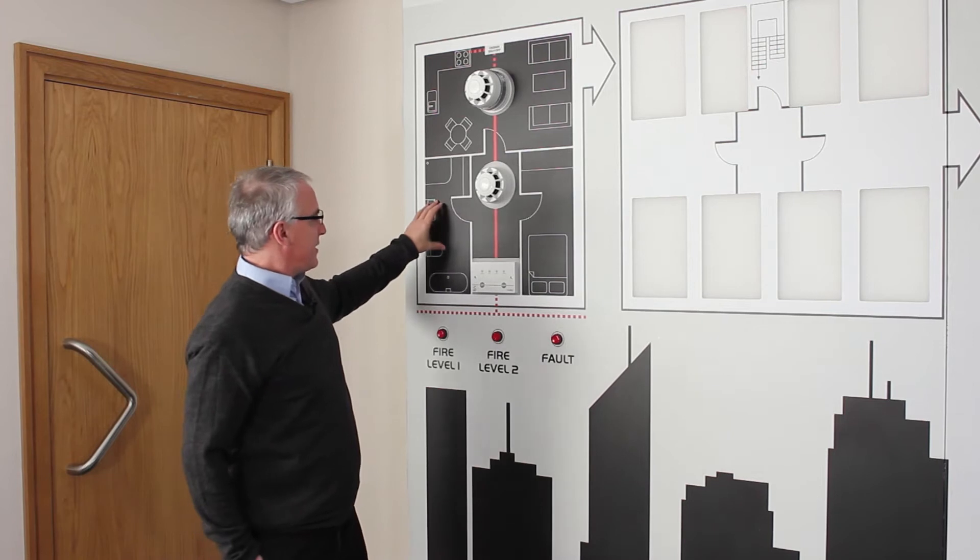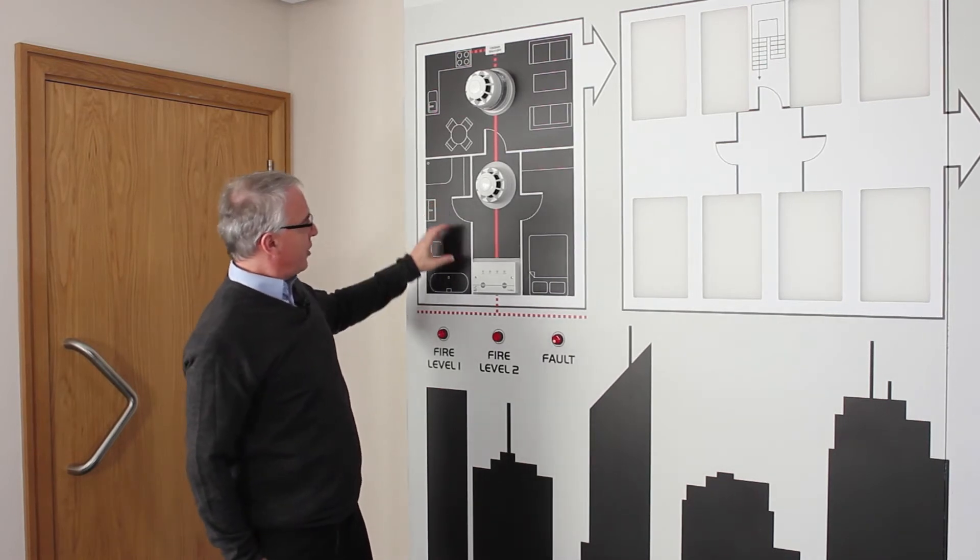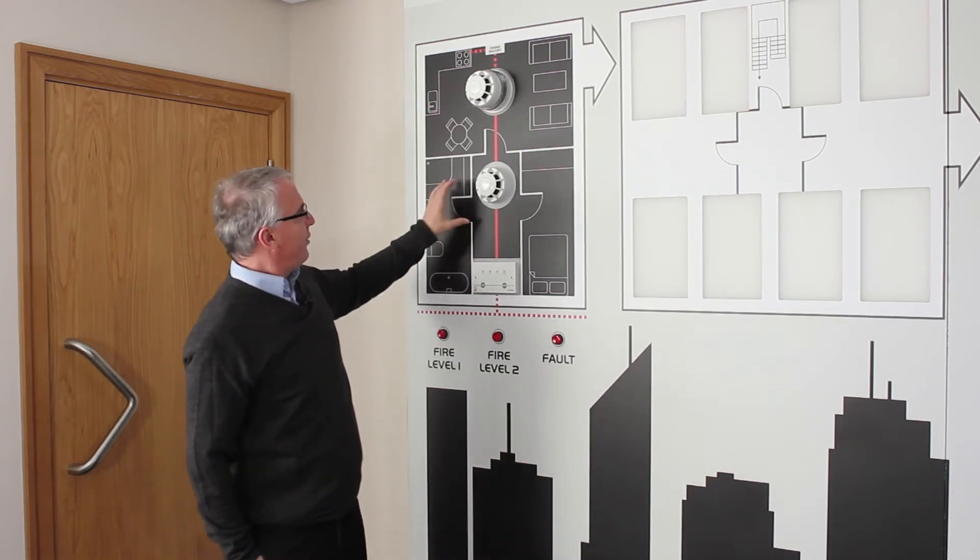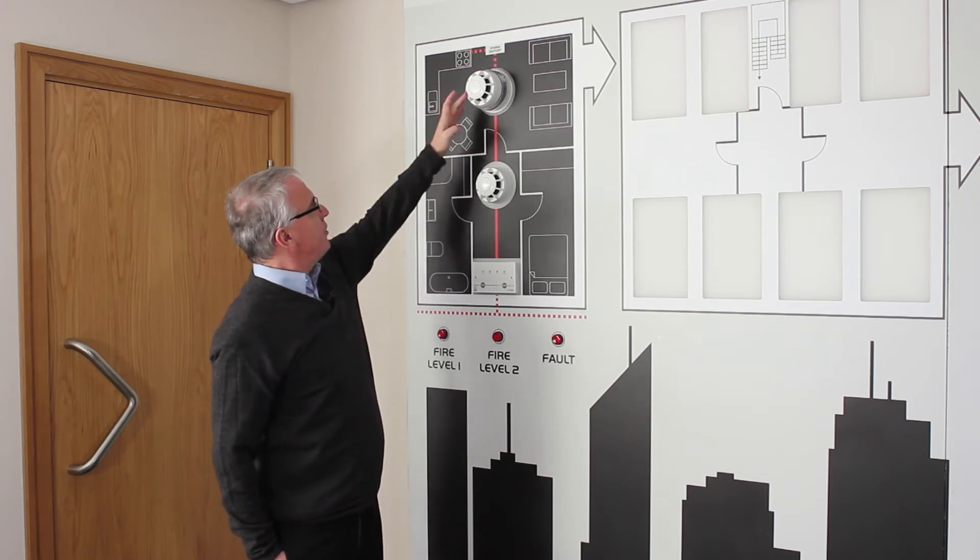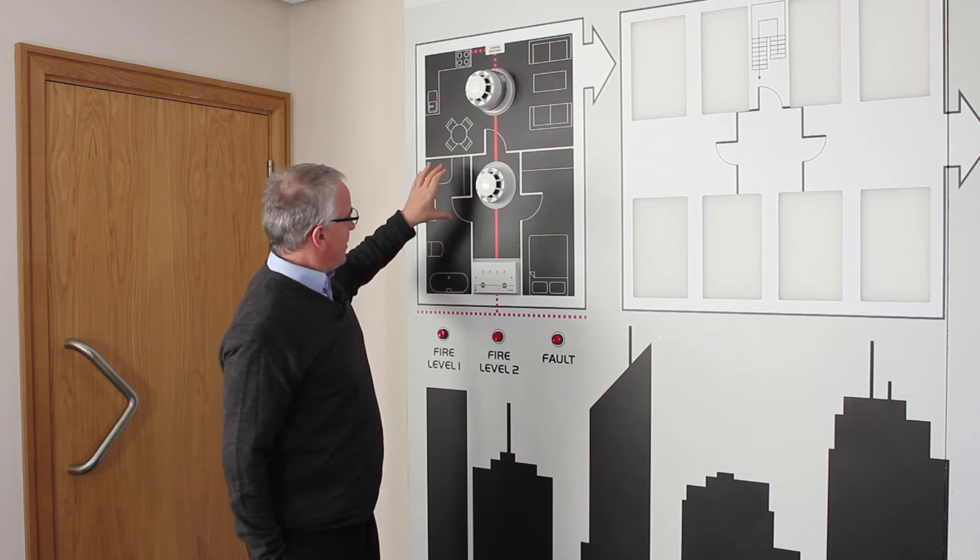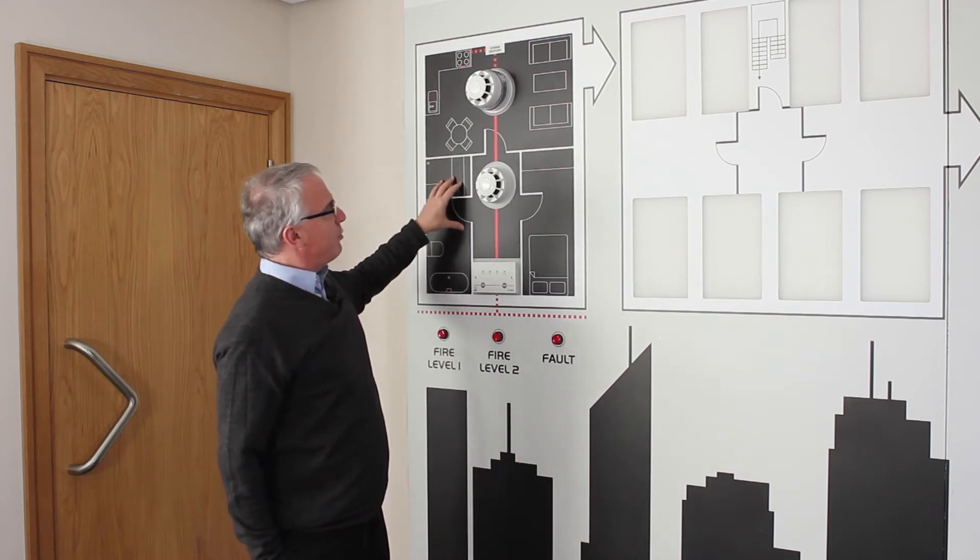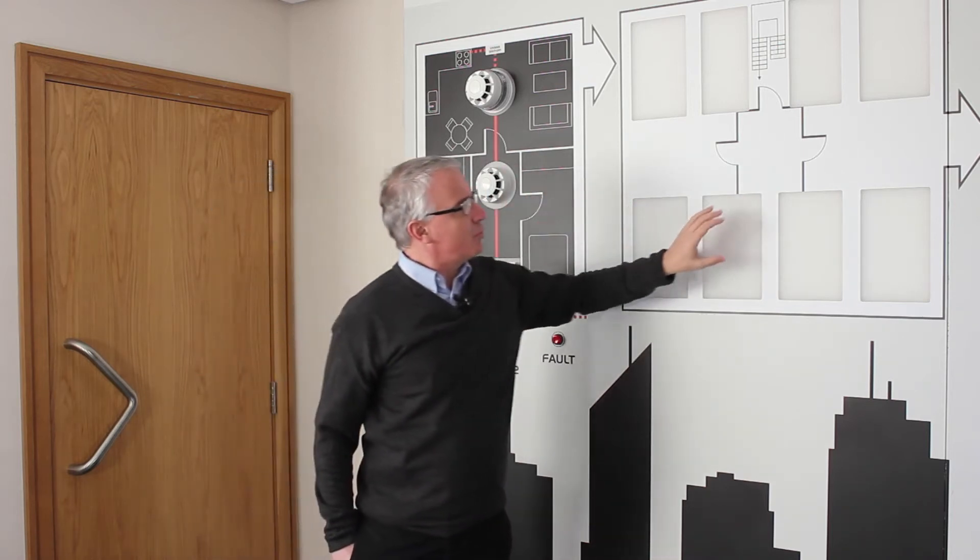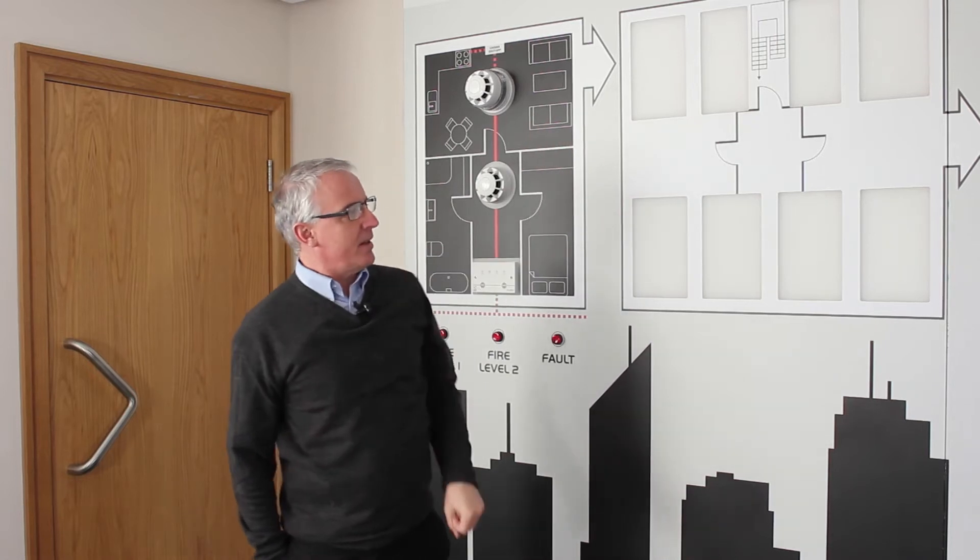This dwelling is a standalone grade C system. You've got your Hush Pro controller and three field devices - that's two detectors and one sounder VAD. Grade C systems like this will be fitted in every individual dwelling throughout the entire tower block.